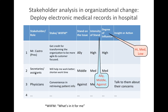Next, we have the secretaries. For them, the "What's in it for me?" is: will it help me work better? Will it shorten my work time? Or is it just going to be extra work for me? So their stand on the issue is in the middle, their intensity of stand is medium, and their degree of influence is also medium. So we observe the secretaries and try to understand why they are sitting in the middle, and eventually try to influence them.